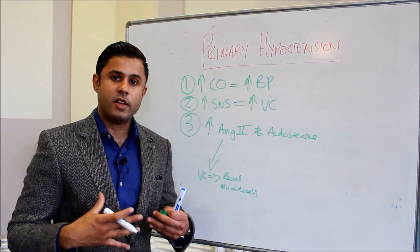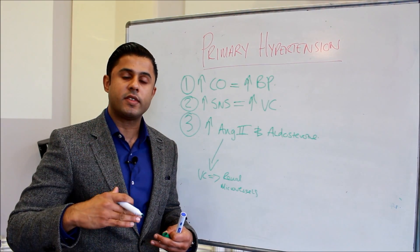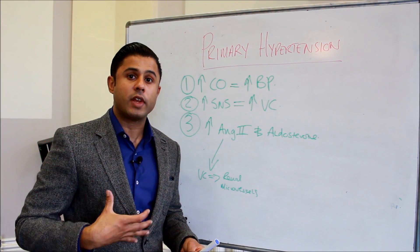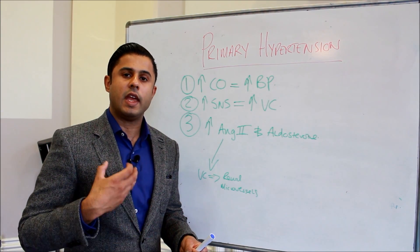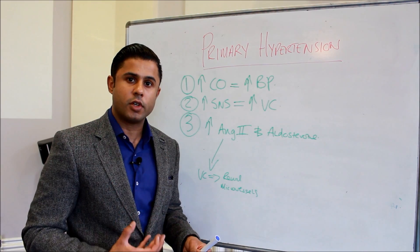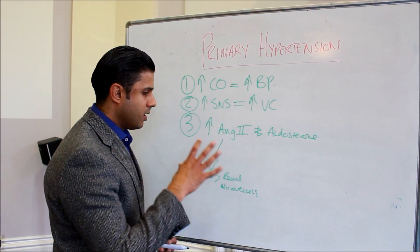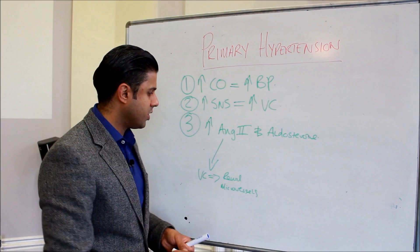Because the kidney function is impaired, you get an increase in extracellular volume because the kidney is not able to get rid of the excess water and salt. So you get high blood volume and then high blood pressure.